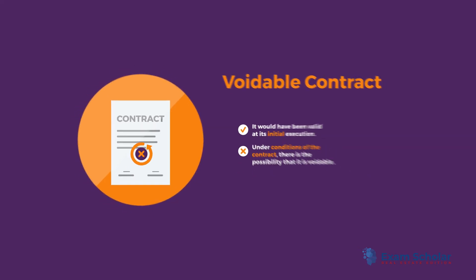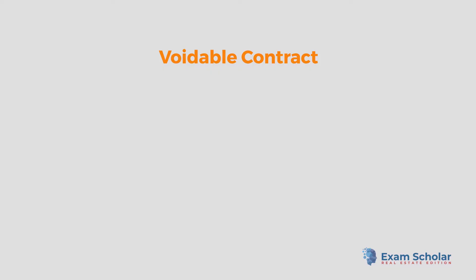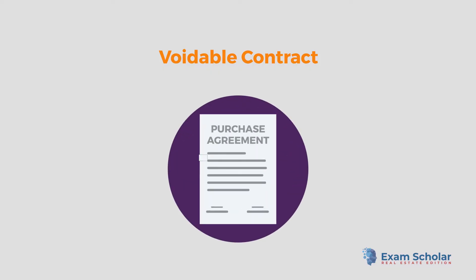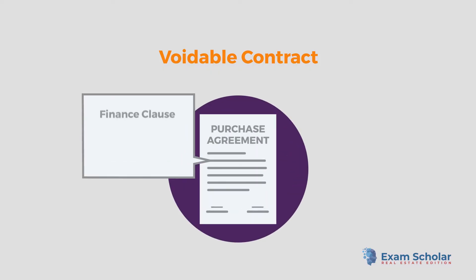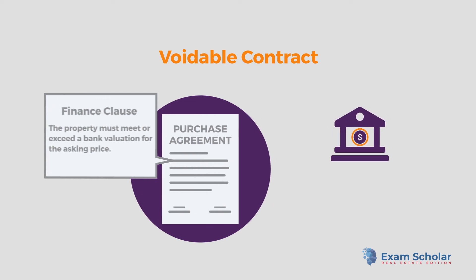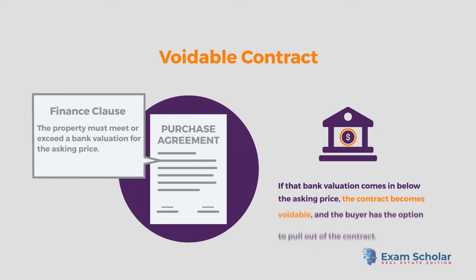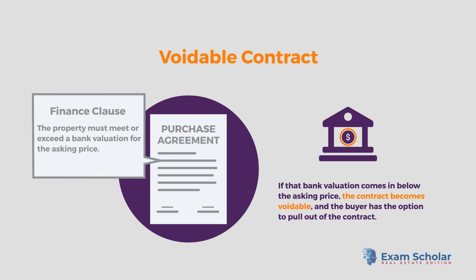An example of a voidable contract is a purchase agreement with a finance clause that says the property must meet or exceed a bank valuation for the asking price. If that bank valuation comes in below the asking price, the contract becomes voidable and the buyer has the option to pull out of the contract.